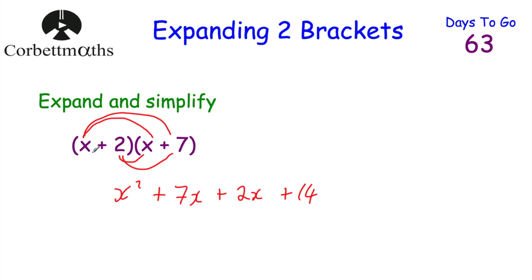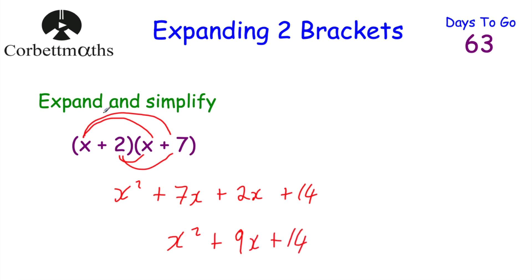So (x + 2)(x + 7) gives us x squared plus 7x plus 2x plus 14. The 7x and 2x can be added together — 7x plus 2x is 9x — so the answer is x squared plus 9x plus 14.